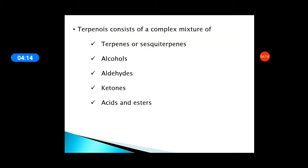Terpenoids consist of a complex mixture of terpenes or sesquiterpenes, where sesquiterpenes means compounds with two monomer units forming only a hydrocarbon chain. Along with the hydrocarbon chain, they may contain a side chain or functional groups such as alcohols, aldehydes, ketones, acids, or esters. Since all these functional groups contain oxygen, when a hydrocarbon unit contains oxygen it is called a terpenoid.